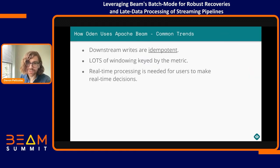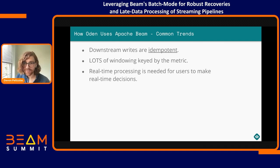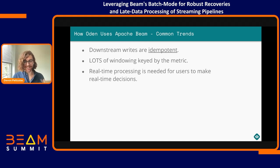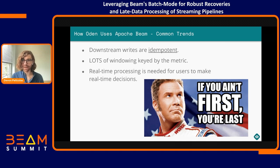Some common trends we've observed: downstream writes are idempotent, meaning double writing is okay and order doesn't really matter. There's lots of windowing keyed by the metric ID — we only care about a window within the space of a particular metric, like just the line speed or just the melt temperature metric. And there's a lot of real-time processing needed for our users to make real-time decisions. As Ricky Bobby says, if you ain't first, you're last — a lot of our real-time products need data in real-time and we can't be waiting.